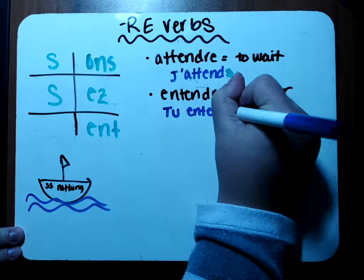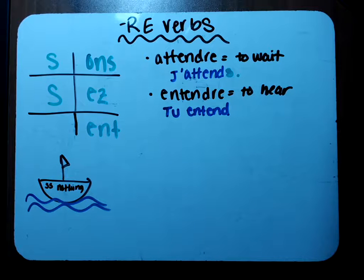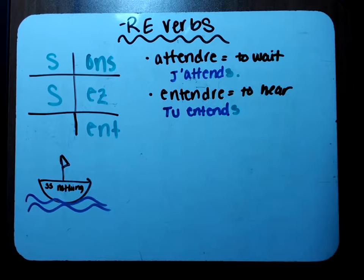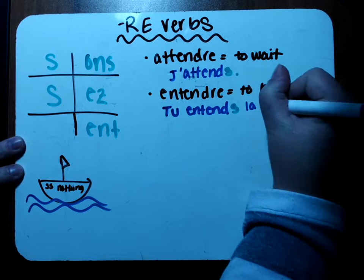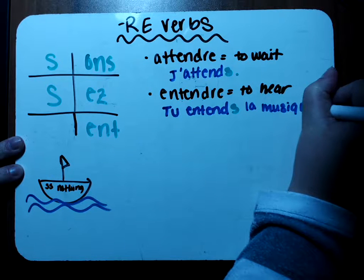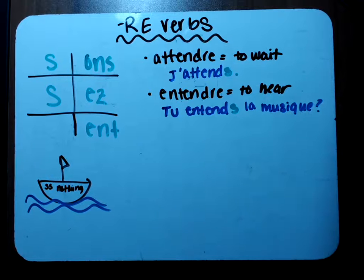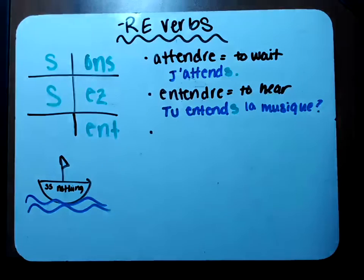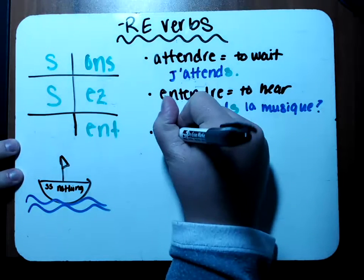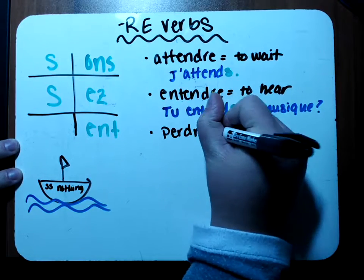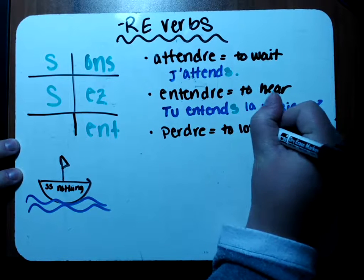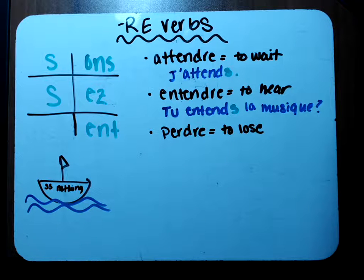Third example — let's do the verb 'perdre,' which means to lose, like 'I lose the match.' Let's say that he loses, so we'll use il. Take your verb and put in the stem — because it's the il form and it's an RE verb, we take off the RE but we add nothing. So: il perd. End of story.